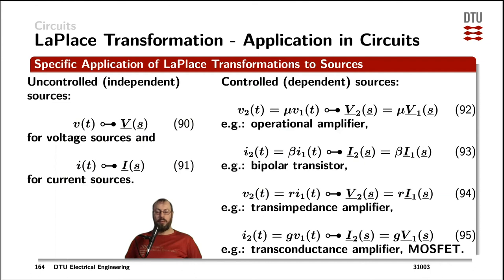For independent or uncontrolled sources — what we used to simply call sources — any source that can be mathematically described as a function in the time domain can simply be transferred into the frequency domain by the Laplace transformation, for both voltages and currents.